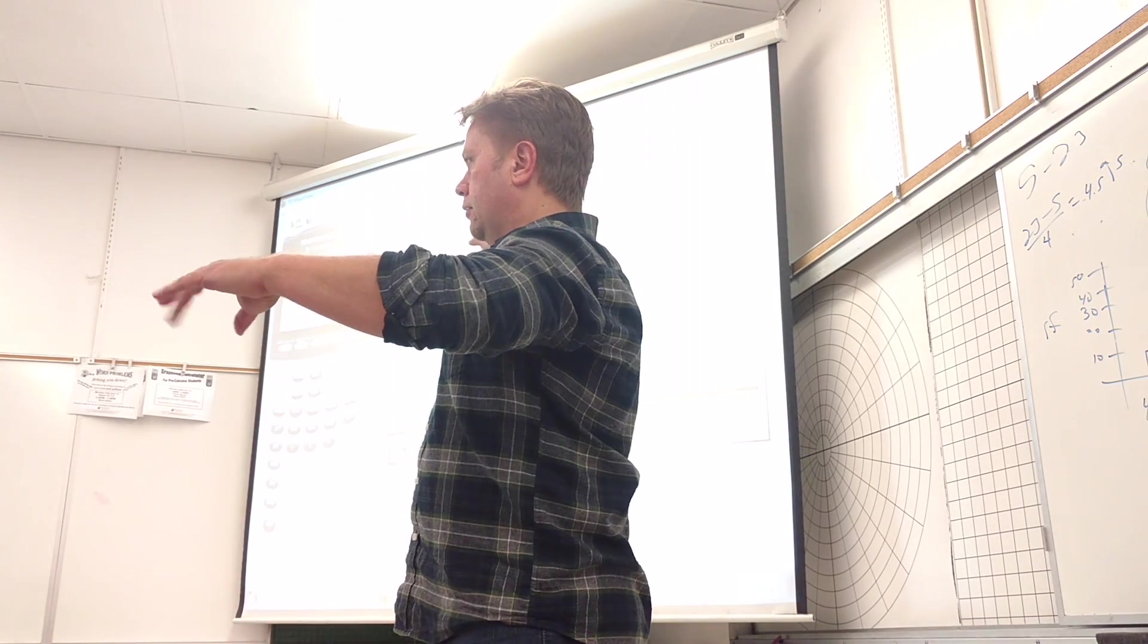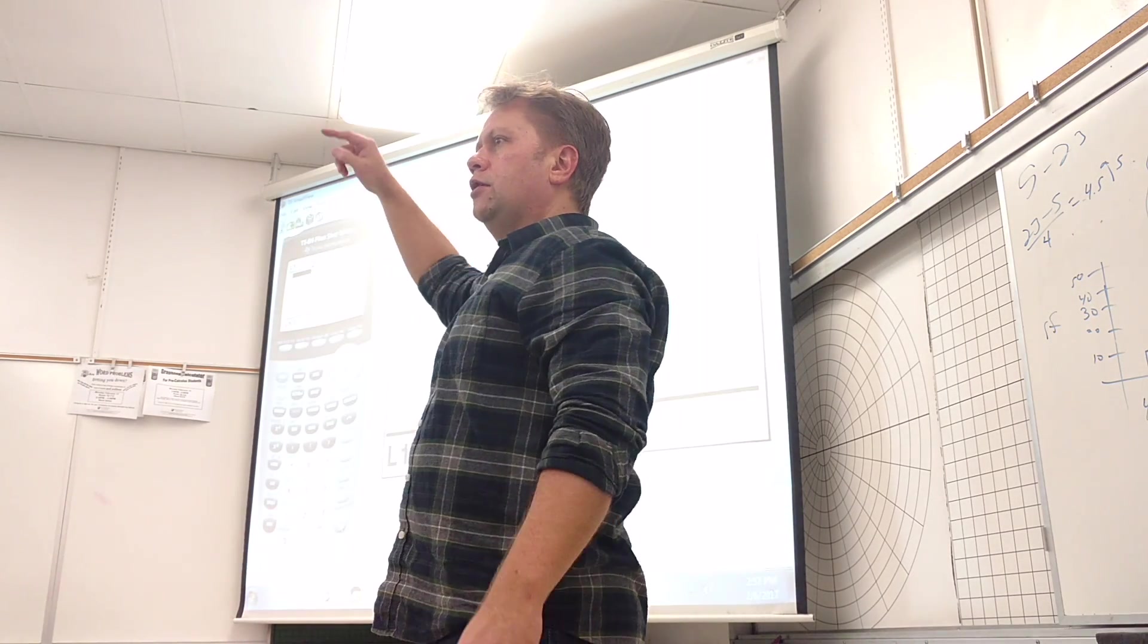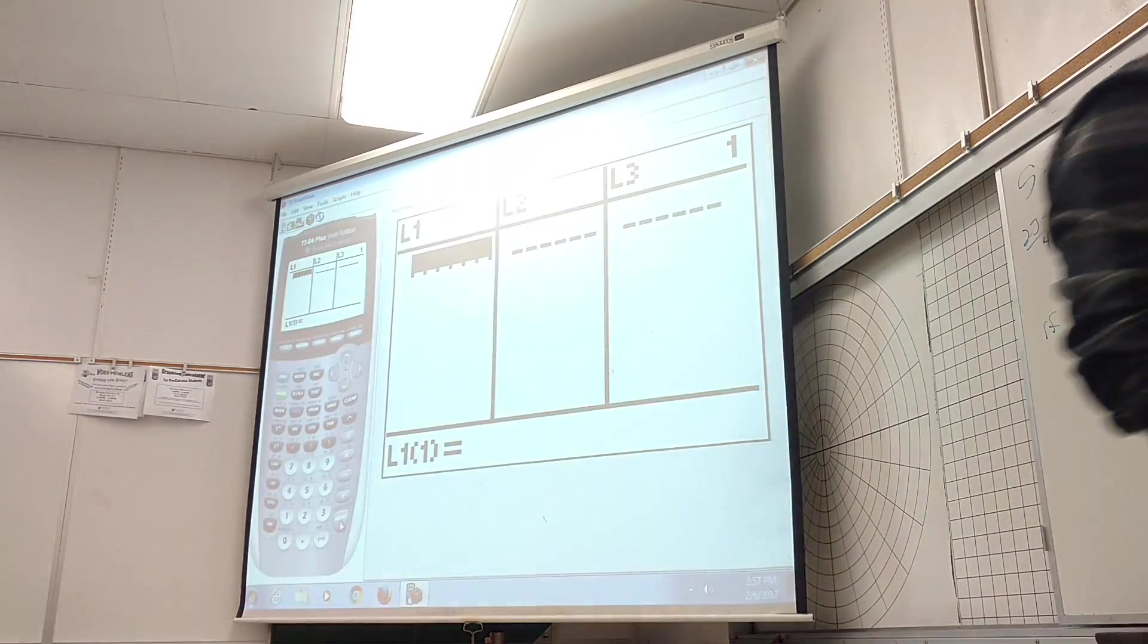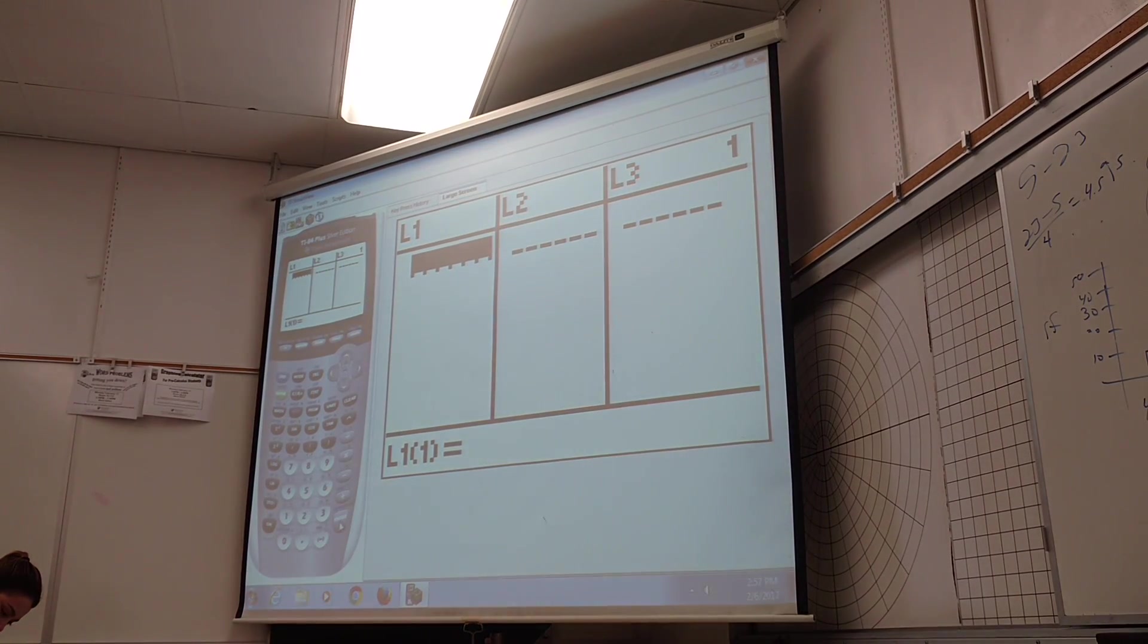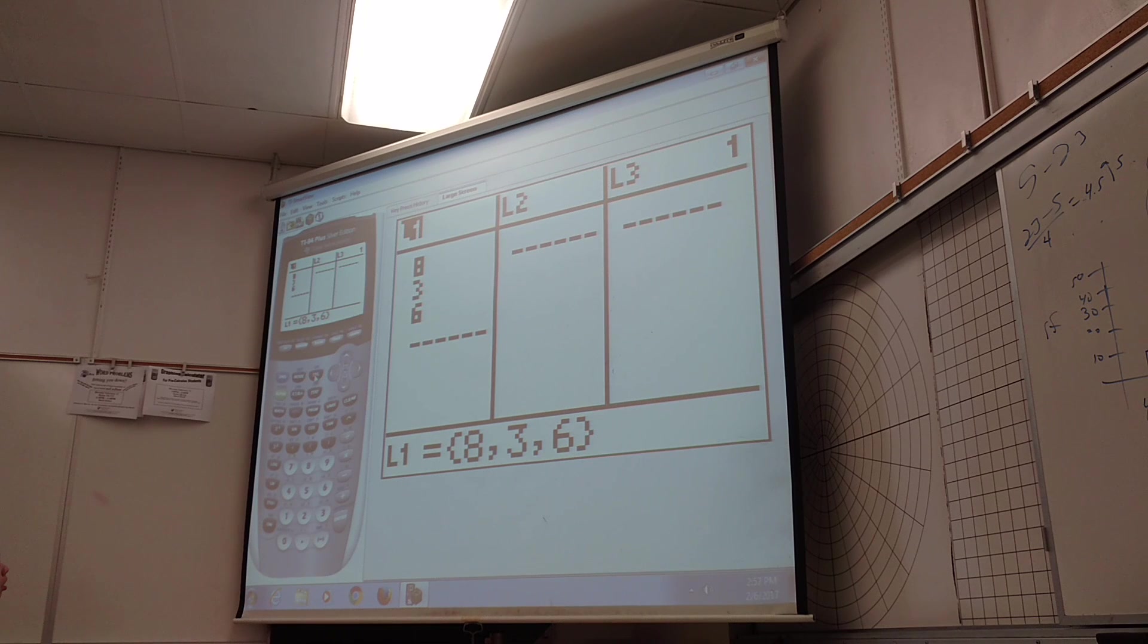So if you want to clear a list, highlight the list. So you hit the up arrow. If you add stuff in here like eight, three, six, and you're like I don't want that, go up to L1. Don't hit delete, that's how you make a list disappear. Hit clear, enter.